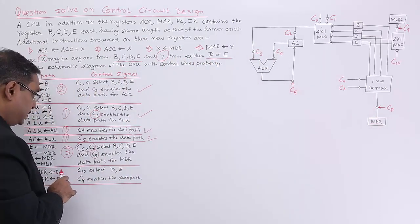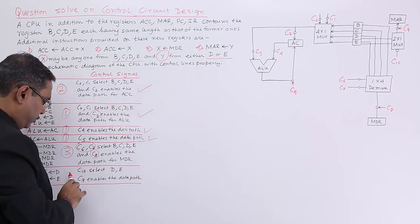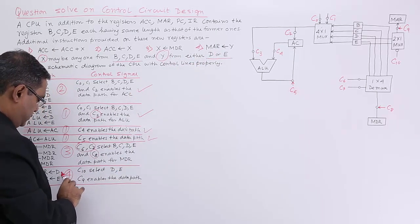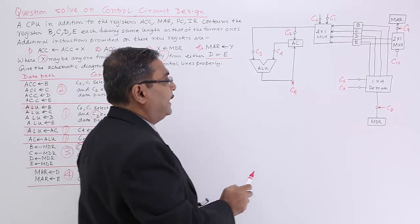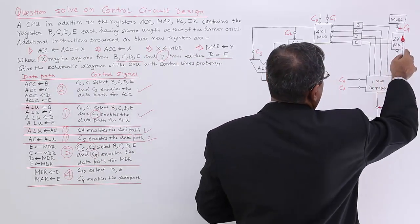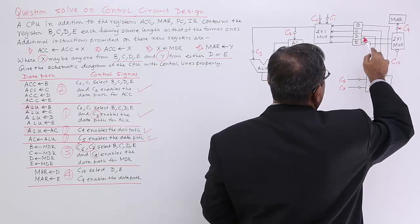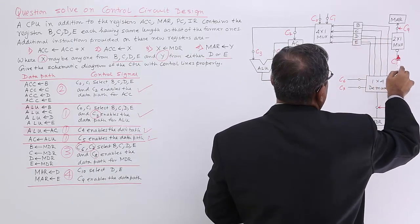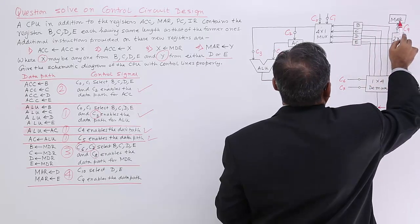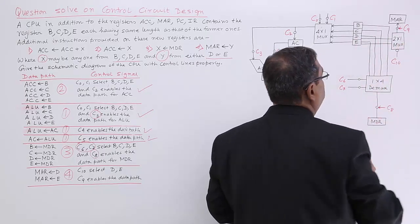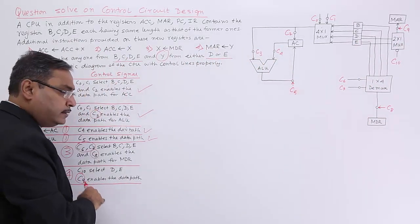The last operation: either D or E will be going to MAR. C10 will decide which register goes — if C10 is 0 then D will go; if C10 is 1 then E will go. C9 is enabling the data path.